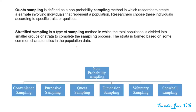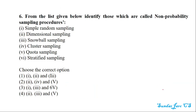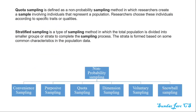This is the diagram of non-probability sampling. Convenience sampling, purposive sampling, quota sampling, dimensional sampling, volunteer sampling, and snowball sampling are the non-probability sampling methods.